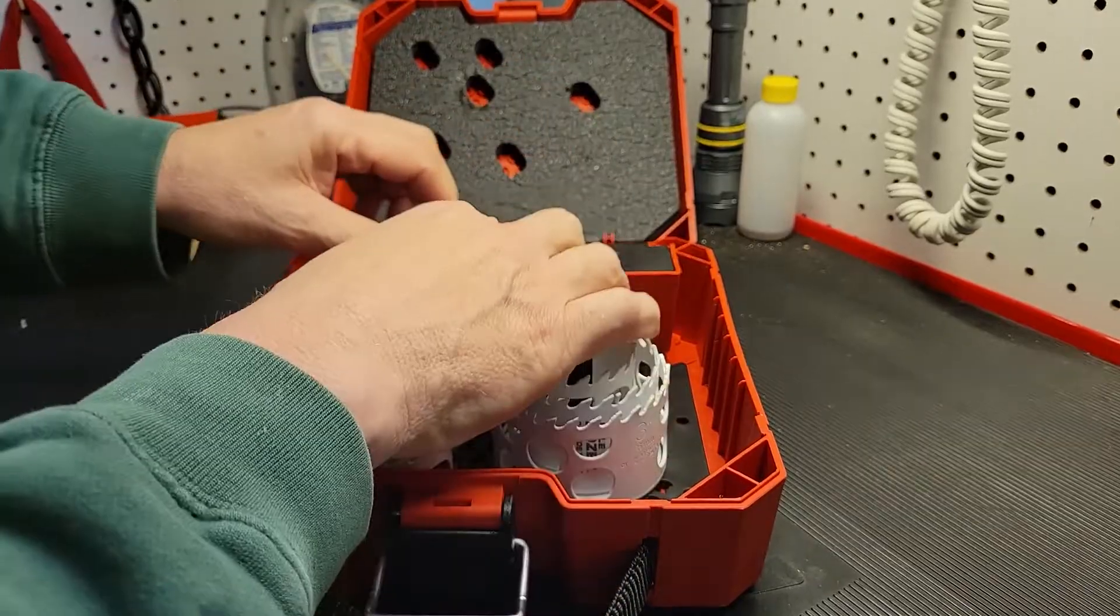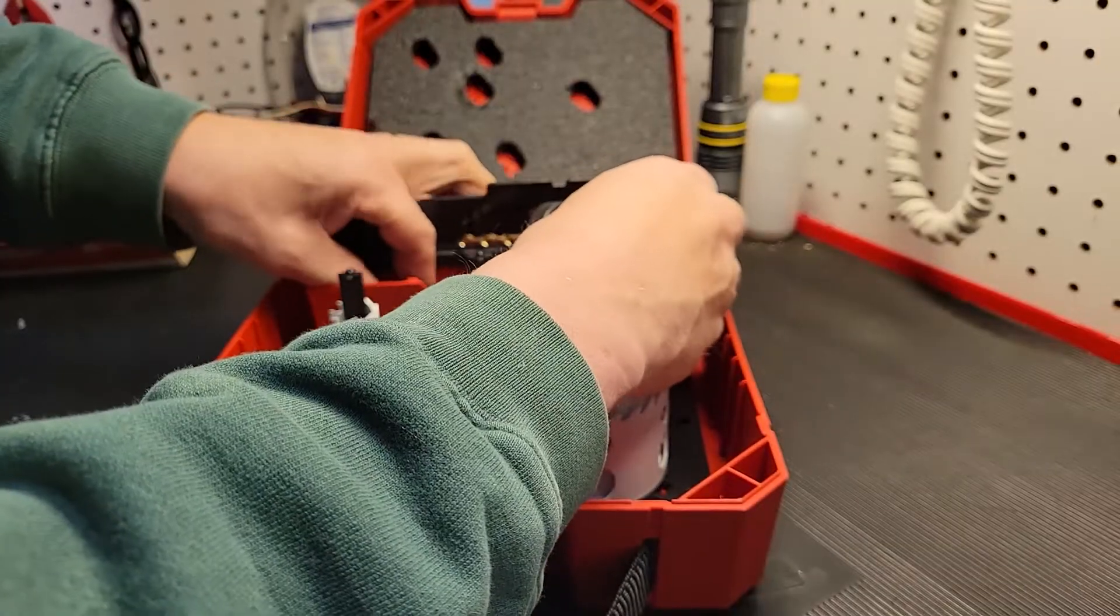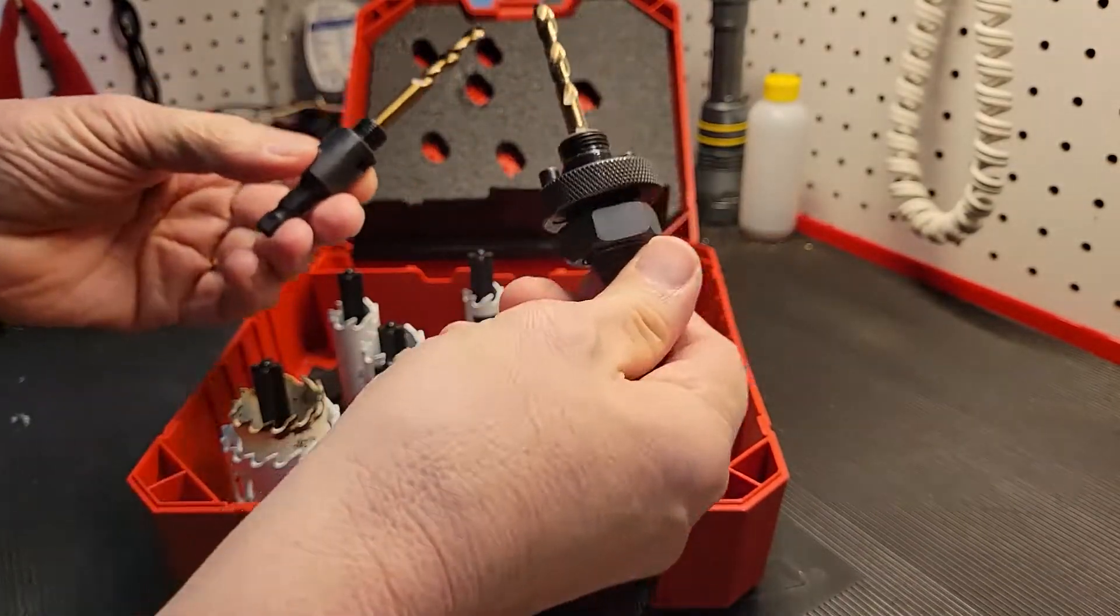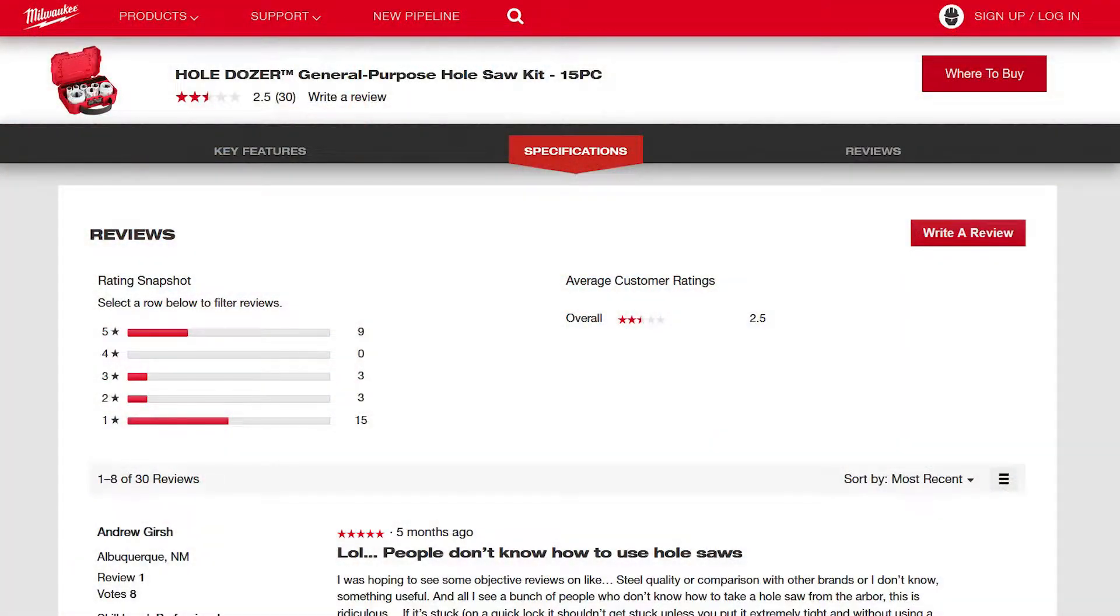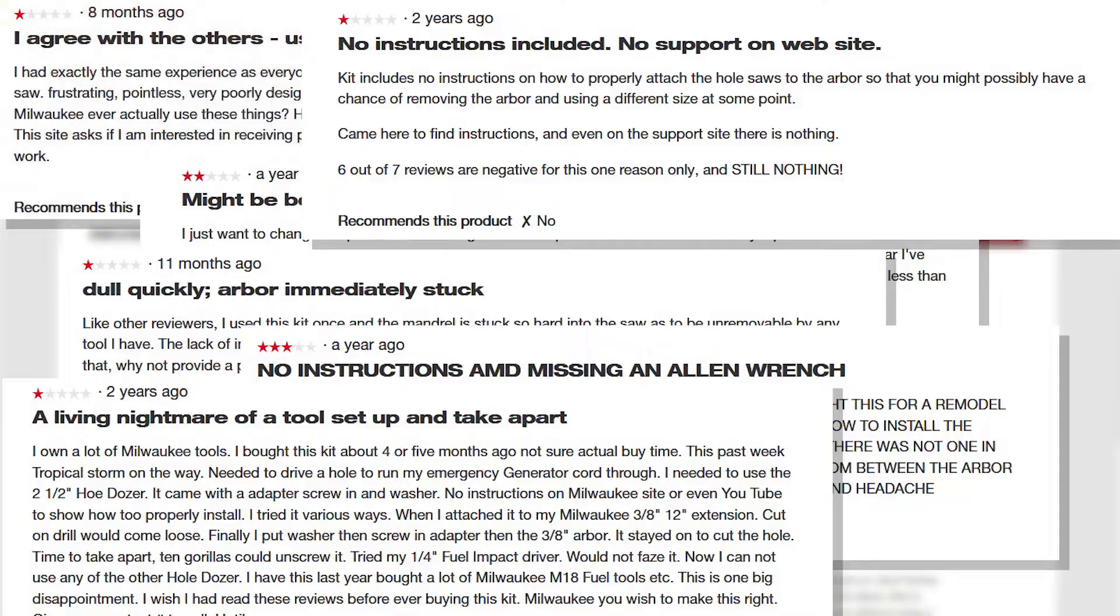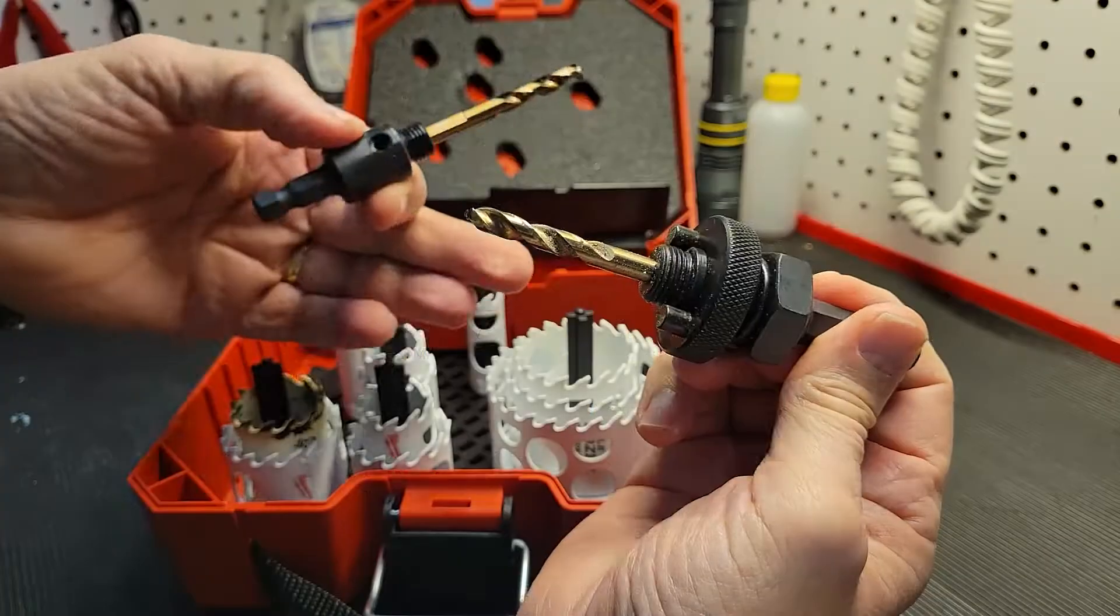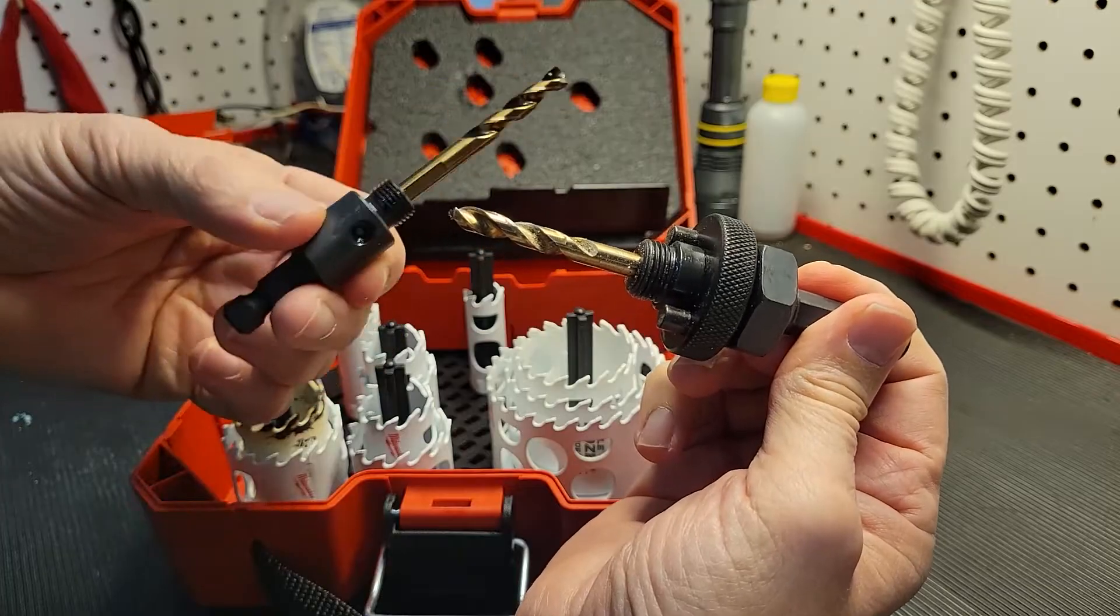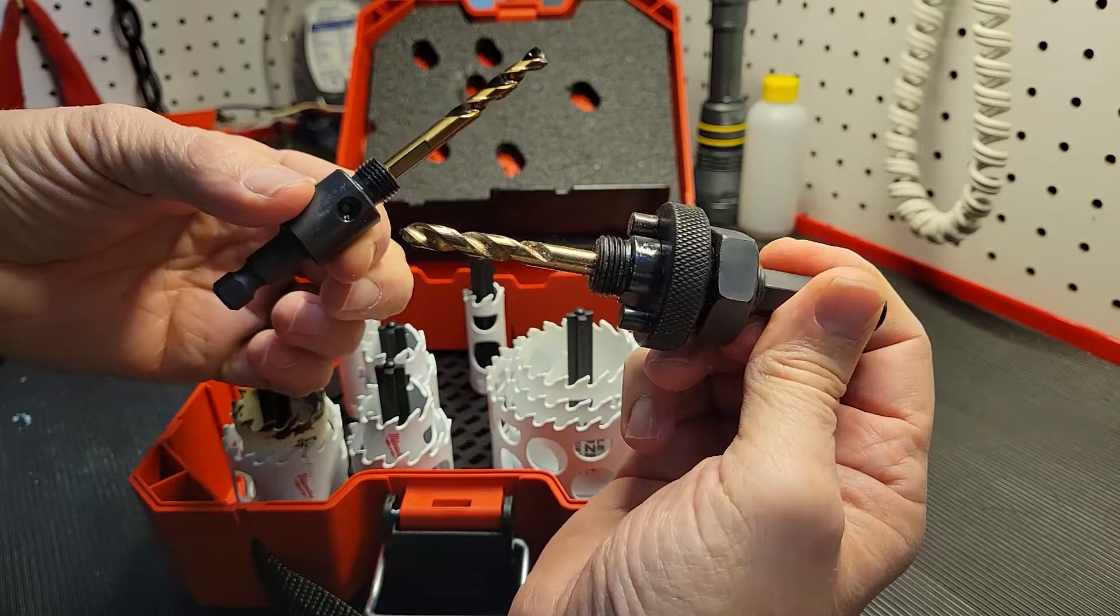But this hole saw comes with not one, but two arbors, and there are no instructions to tell you how to use them. If you go on their website and some of the other ones, you'll see there's lots of confusion as people get frustrated and just return it, not being able to operate this tool correctly. That's what we're going to take care of today.